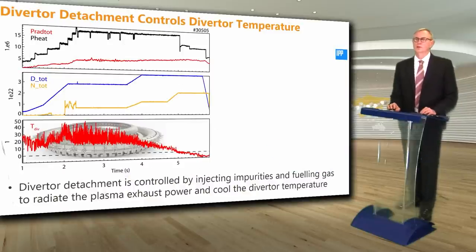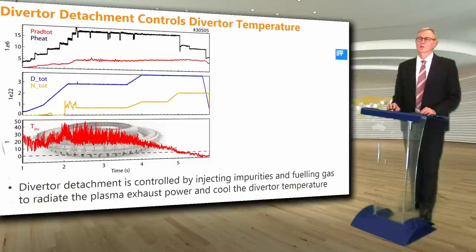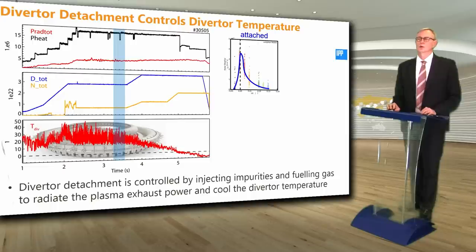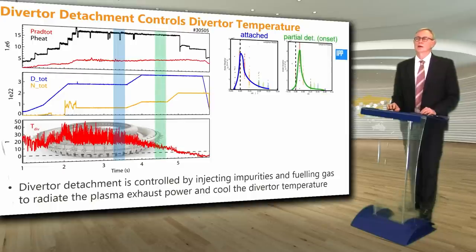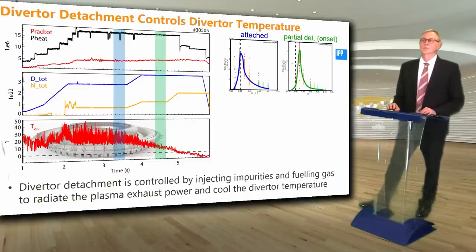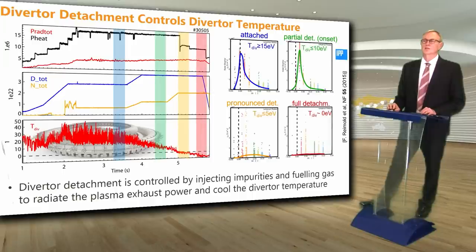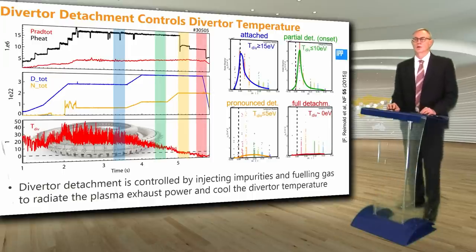With 73 megawatts of heating power, the diverter heat flux will need to be controlled through diverter detachment by injecting impurities and fueling gas into the diverter to radiate the plasma energy away. Graphs from ASDEX Upgrade show the evolution of diverter temperature with increasing gas injection: starting with an attached diverter (blue, high temperature), then the onset of diverter detachment (green), a detached diverter (yellow, low temperature), and finally full detachment (red, very low diverter temperature).